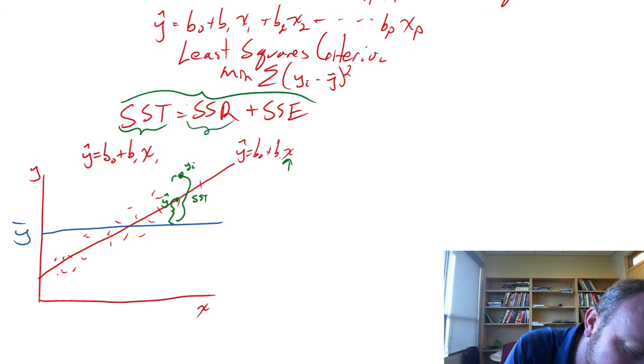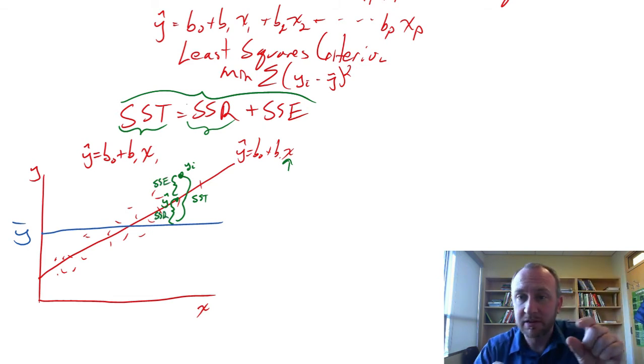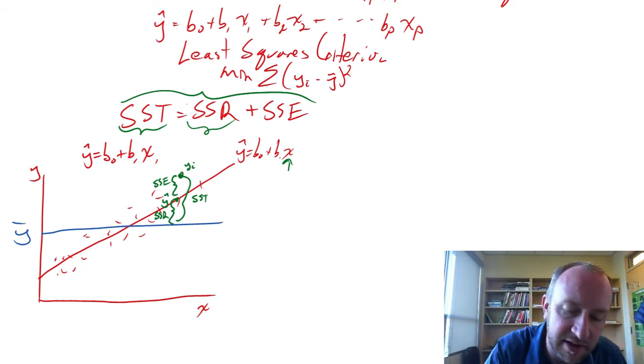And then, of course, this is what remains. Same idea, if we square those differences for every observation and add those up, that gives us SSE.